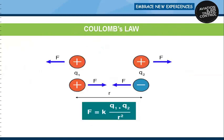Coulomb's law further defines the relationship between charges. It states that like charges repel and opposite charges attract with a force proportional to the product of the charges and inversely proportional to the square of the distance between them. This means that objects with greater charge repel similar charges and attract opposite charges with great forces. Also, as the distance between the charges becomes greater, the repulsion or attraction between the charges decreases.